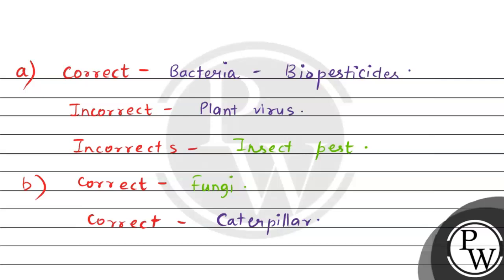Then we have Bacillus thuringiensis. This is correct. The bacterium is used against insect pests. So you can see that three options are correct.